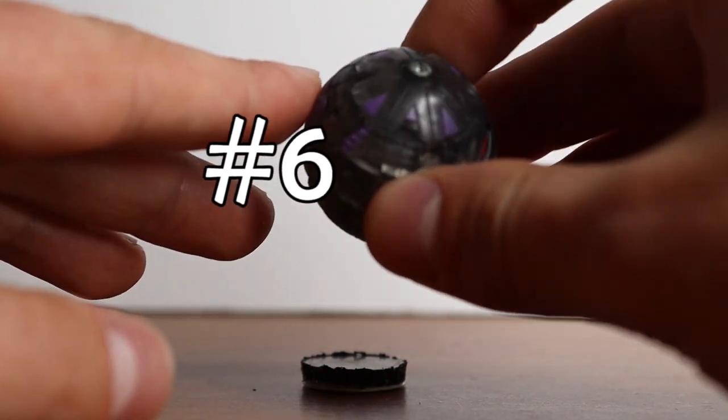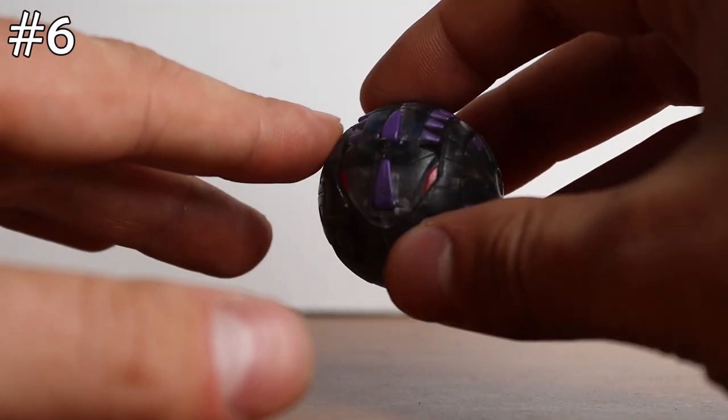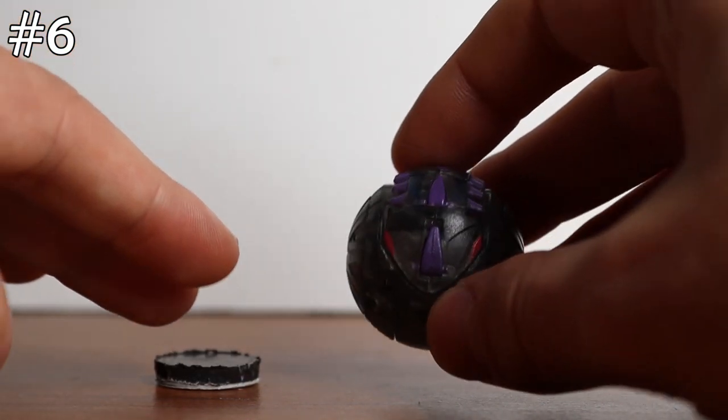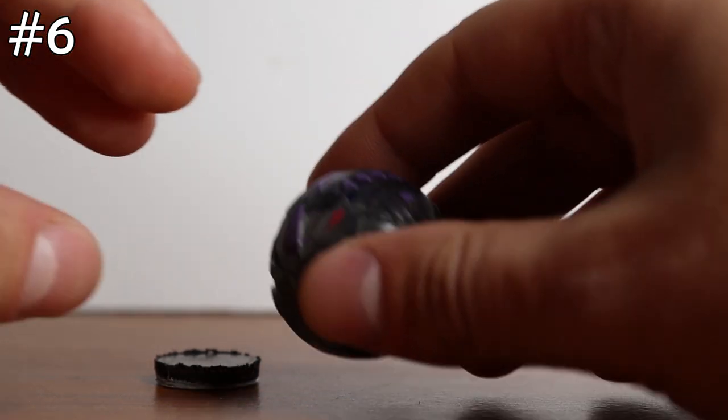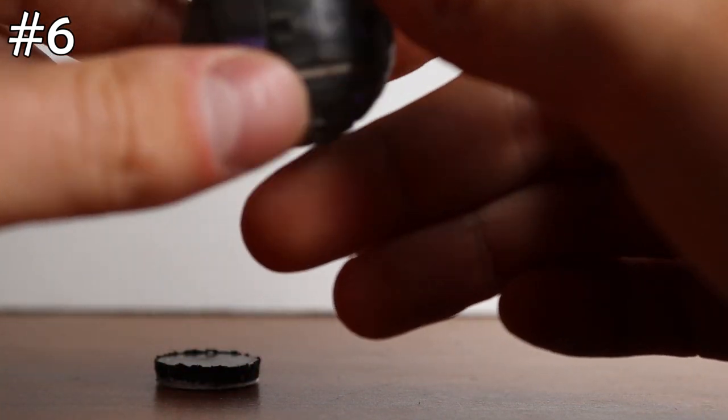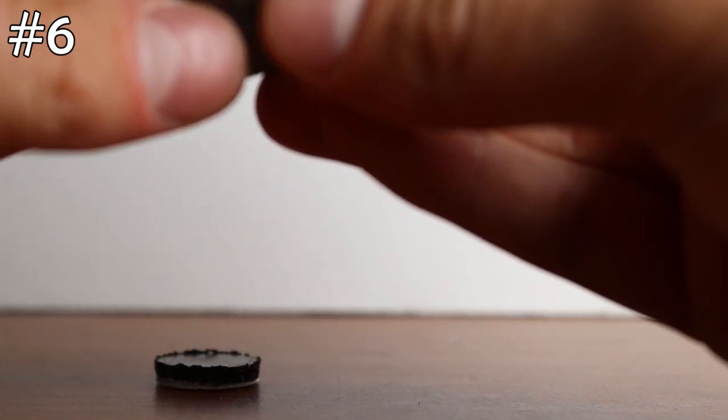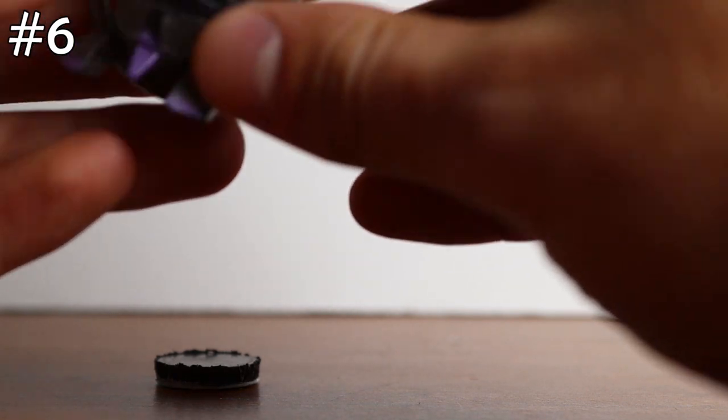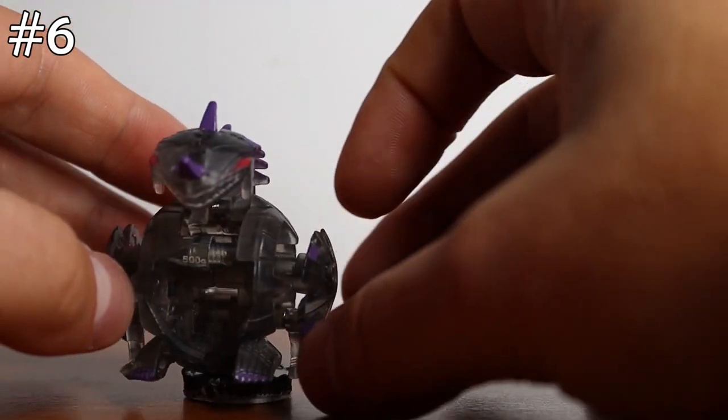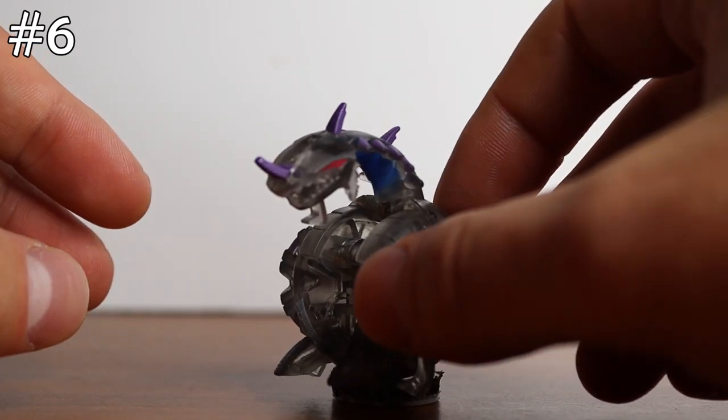This is up next on the list, which is a Translucent Darkus Hydronoid. So incredibly sought after. That is pretty much why it's so rare. These guys go from anywhere from like $200 or $300 easy. Hydronoid was one of the most popular characters in the show because it was the bad guy. He is super popular and he only came out in the Masquerade Evolution pack that was a Walmart exclusive. So you can only find him in that pack.